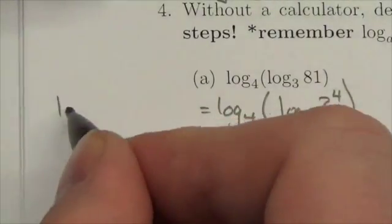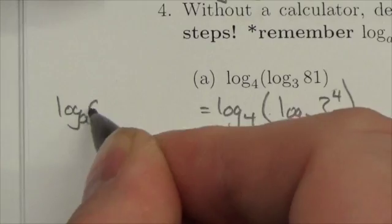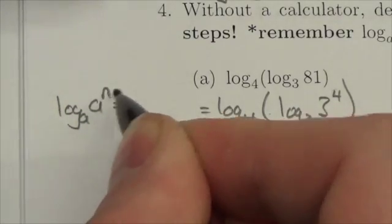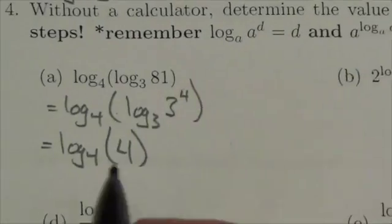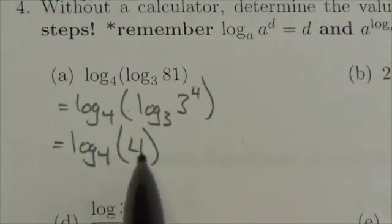The rule is essentially if you've got the log base a of a to the n, this whole expression is equal to n. So in that case here, log base 3 of 3 to the 4 has got to be equal to 4.